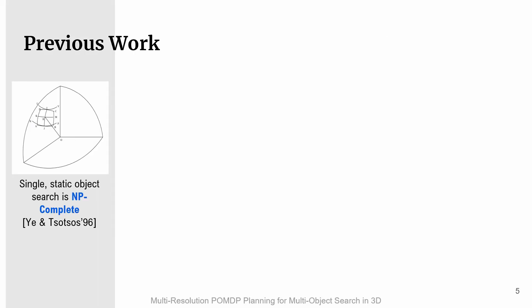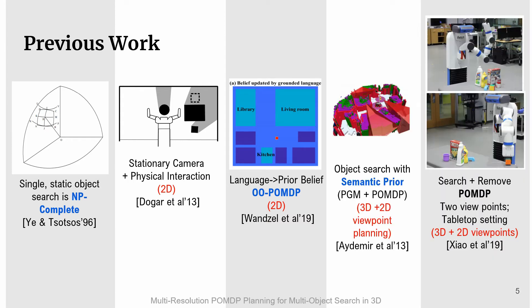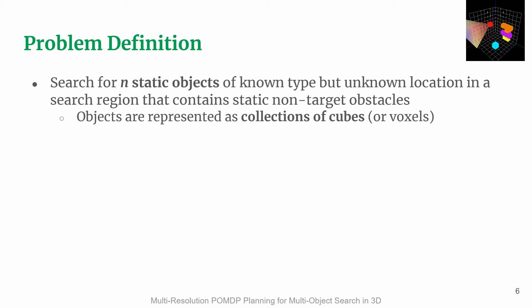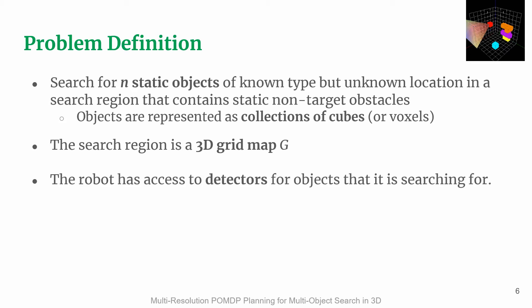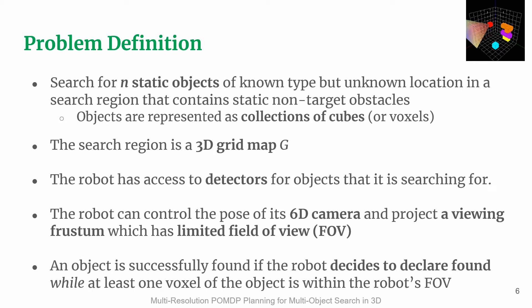Previous work has shown that searching for a single static object in 3D by controlling camera parameters is NP-complete. More recent works study object search in various settings modeled as a POMDP, but constrain the problem in 2D. Other works have considered 3D object locations but planned over a set of 2D viewpoints. In our problem setting, the robot is tasked to search for n static objects of known type but unknown location in a search region containing static non-target obstacles. Objects are represented as collections of cubes or voxels. The search region is a 3D grid map G, and the robot has access to detectors for the objects it is searching for. The robot controls the pose of its 6D camera and projects a viewing frustum with a limited field of view. An object is successfully found if the robot declares it found while at least one voxel of the object is within the robot's field of view.